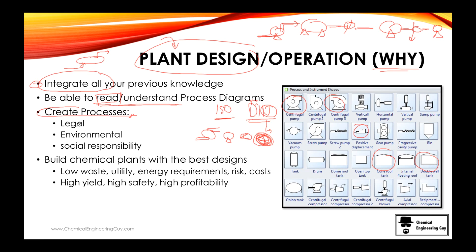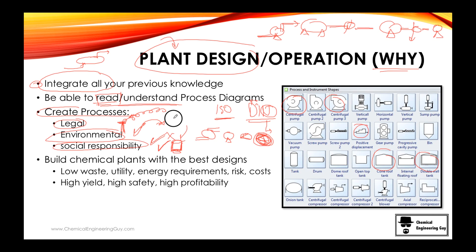We also want to understand the legal aspects behind creating new processes and products: the environmental impact — are we destroying a forest, dumping in water, burning too much fuel? And social responsibility — if you know a product will harm people, such as sugar-added sodas, that's a social responsibility question that depends on your ethics. Of course, not building a factory also means not employing people, so that's another social impact to consider.